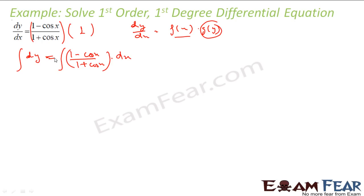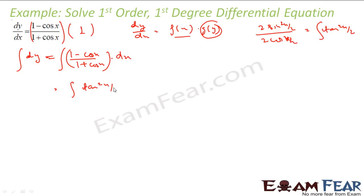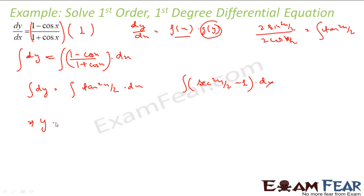Integrate both sides. This is not difficult because we have done this kind of question: 1 - cos x can be written as 2 sin²(x/2), and 1 + cos x as 2 cos²(x/2). So this simplifies to tan²(x/2). The integration of tan²(x/2) we know — we write it as sec²(x/2) - 1. Integration of sec²(x/2) is 2 tan(x/2), and integrating -1 gives -x. So y = 2 tan(x/2) - x + c. That is the answer.